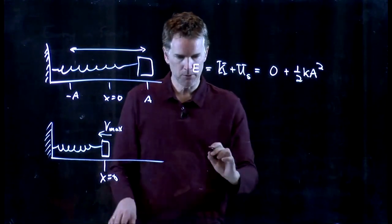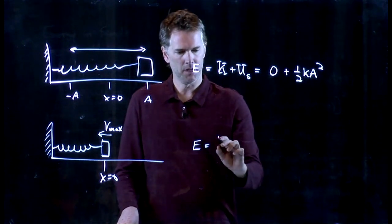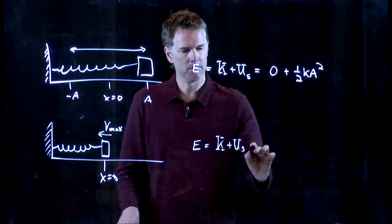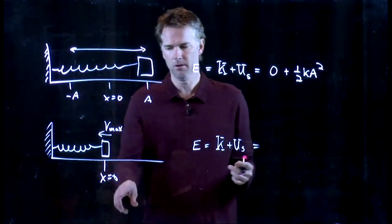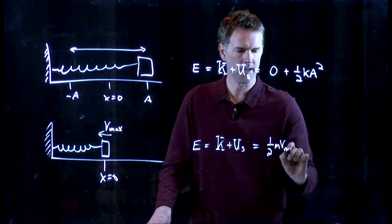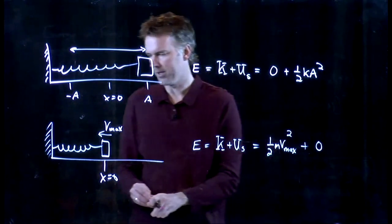When it comes back to x equals zero, what do we have? We have some kinetic plus potential, but now the potential is zero because it's at x equals zero, and we just have one-half m Vmax squared plus potential energy of zero.